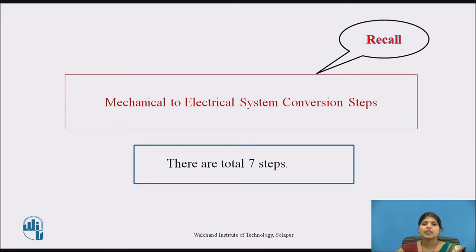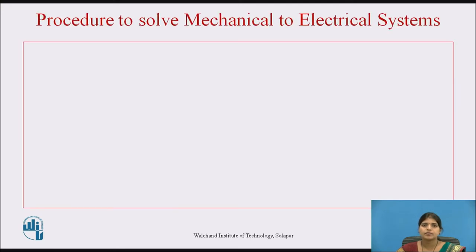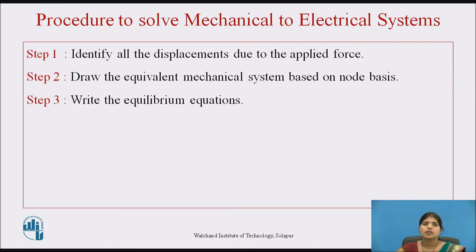There are total 7 steps; we will see them one by one. Step 1 is: identify all the displacements due to applied force, and find out the total number of masses and the displacements. Step 2 is: draw the equivalent mechanical system based on the node basis and write down the equilibrium equations.